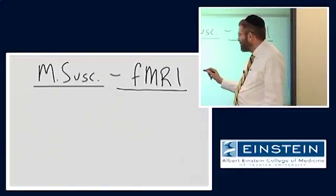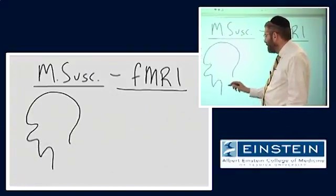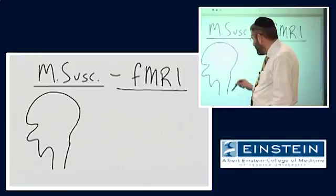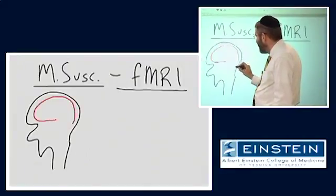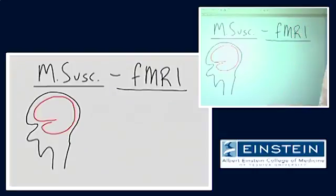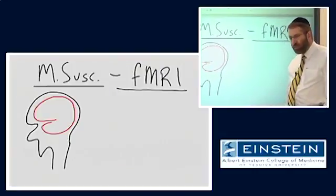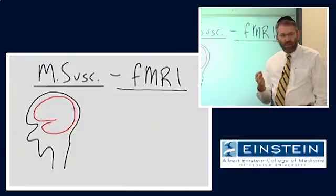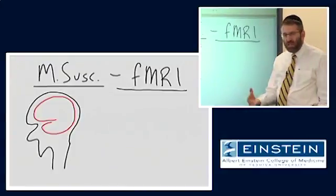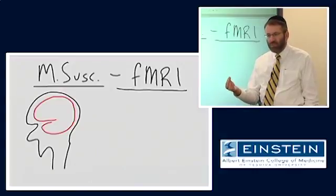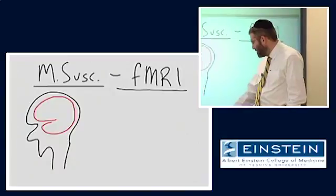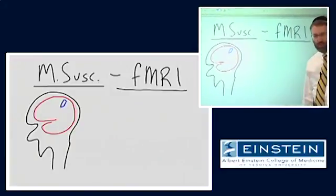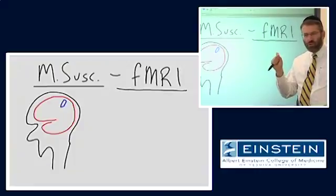To give you a sense of what we're talking about: most of you are probably aware that the brain is functionally subspecialized, meaning that when you do a certain task — if I tap my fingers together — there are specific regions of my brain involved in conveying the instruction set to my hand and muscles. There would be a region in the precentral gyrus of the frontal lobe, primary motor cortex, that is involved in the motor control of these fingers.